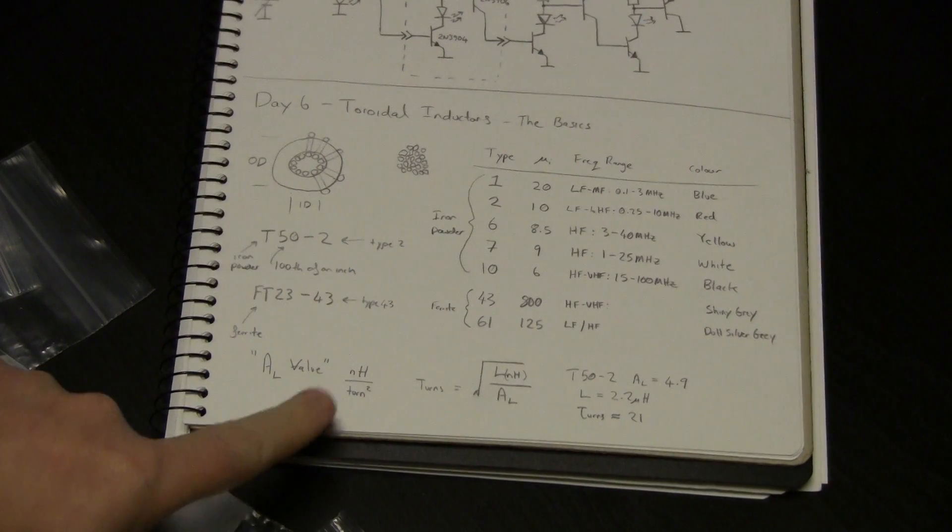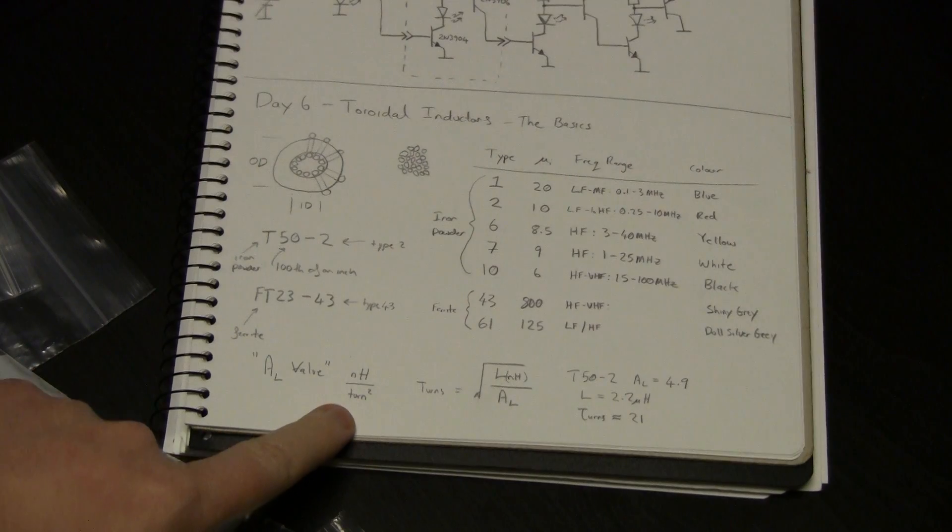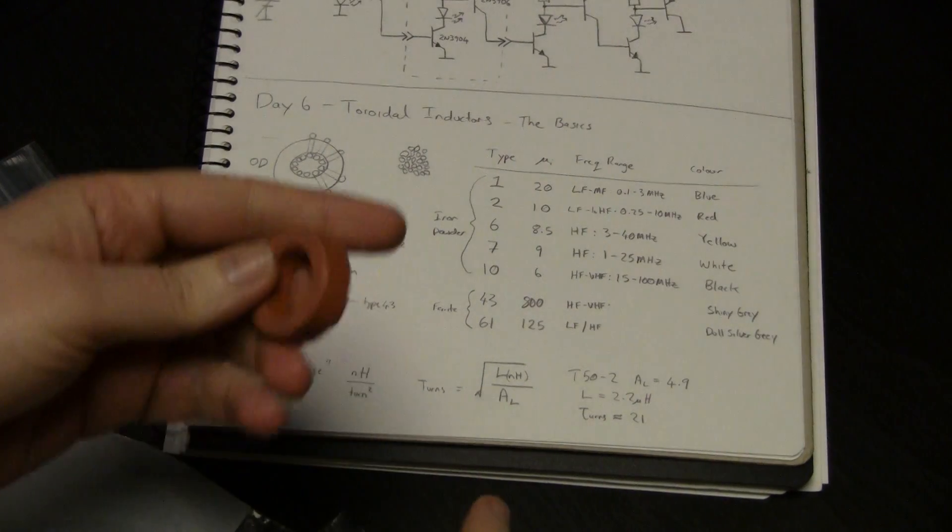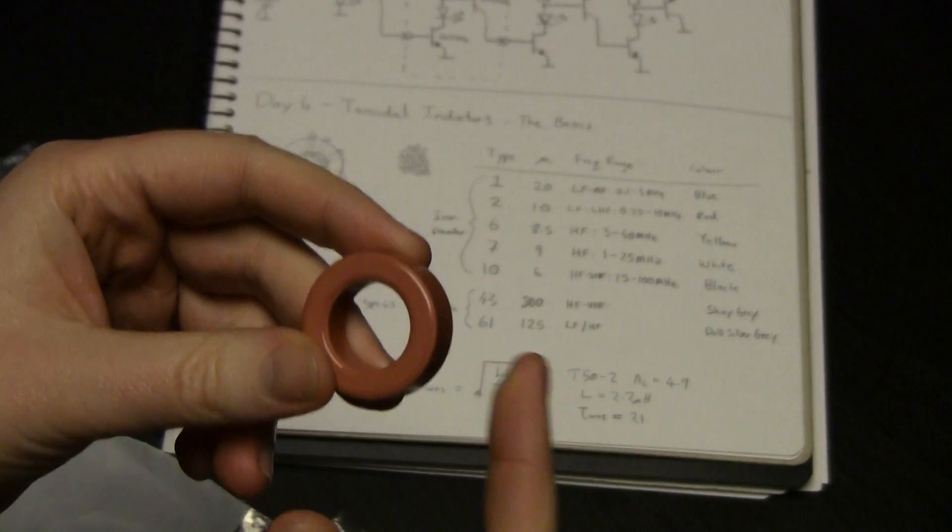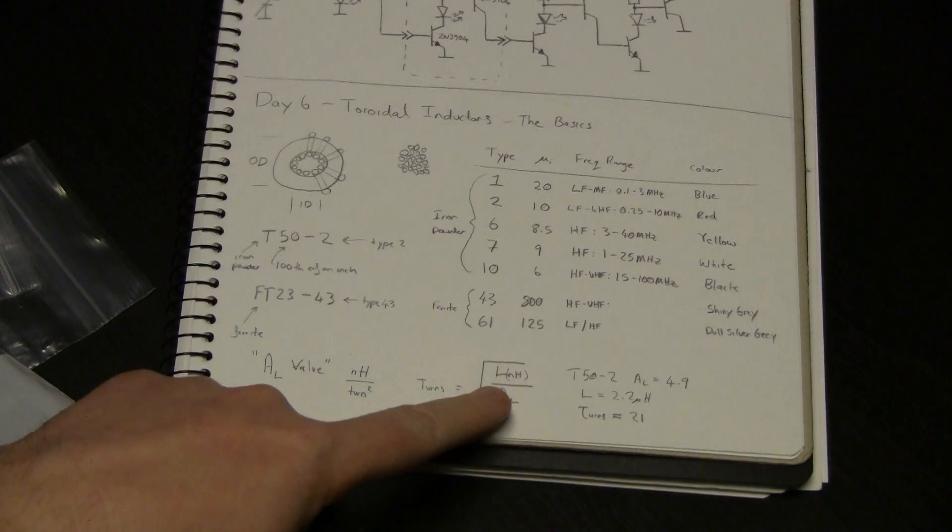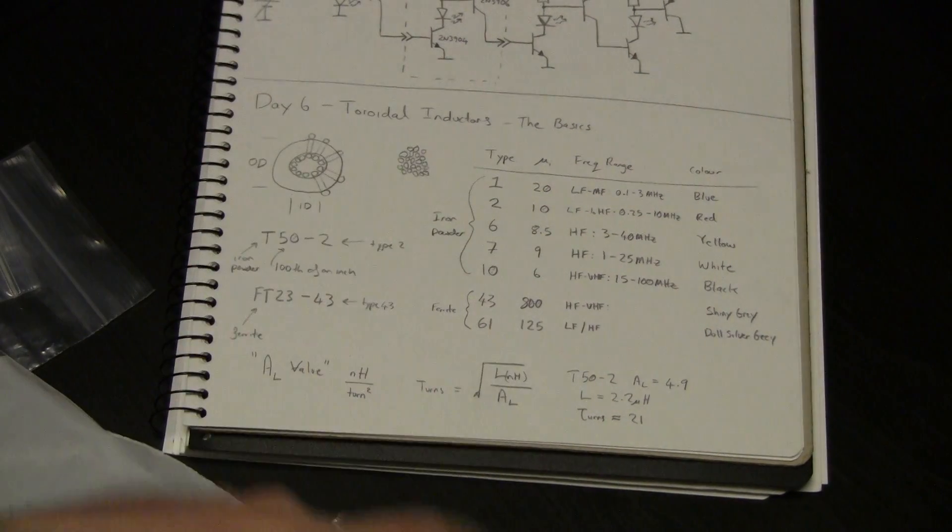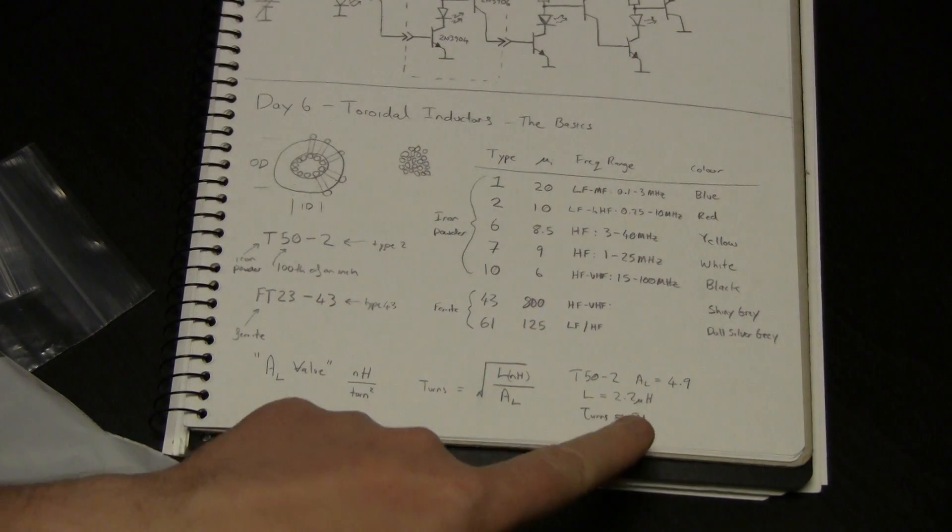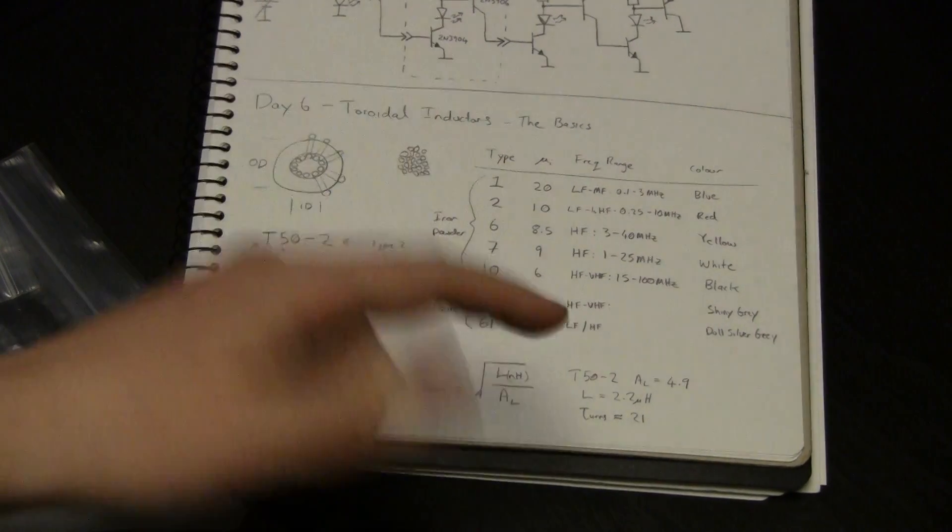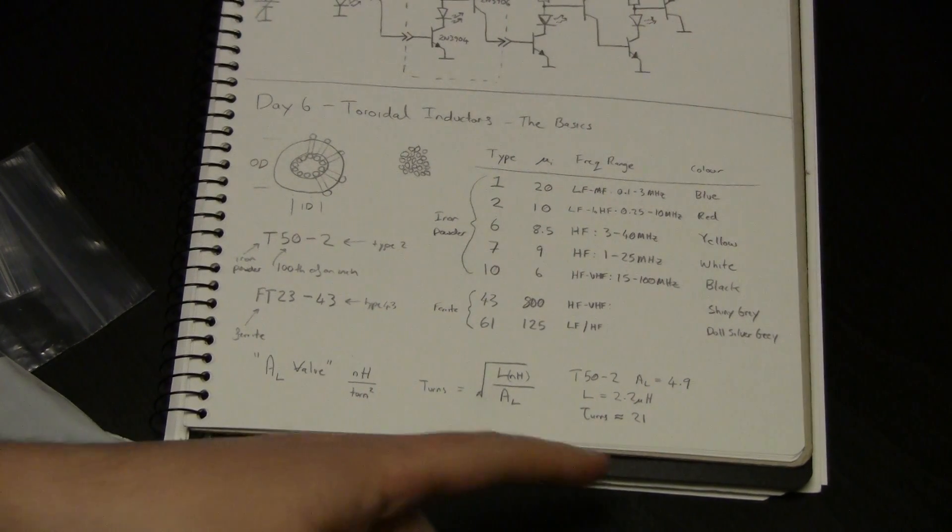So finally, this AL value. You'll see most cores specified with this AL value. It's in this annoying unit of nanoHenrys per square turn, or turn squared. With all inductors pretty much, the inductance scales with the square of the number of turns. So if you double the turns, you have four times the inductance. In this case, you can use a simple square root of the inductance that you want in nanoHenrys over this AL value, square rooted, and you've got the amount of turns. So here's an example. If we wanted to make a T-50-2 inductor, we look up the AL value which is about 4.9, and then we want to say make a 2.2 microHenry inductor. Do the math, you work out, and I generally round, it'll come out at some fractional value, but obviously you can't have a fractional turn. And in this case, it's 21 turns.